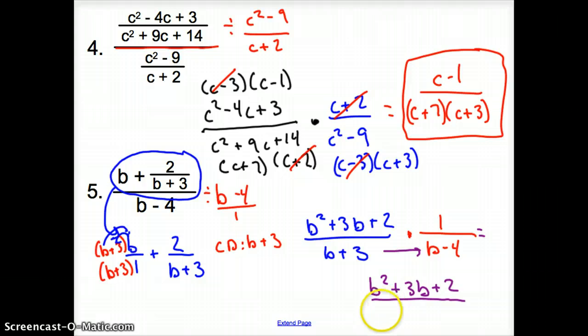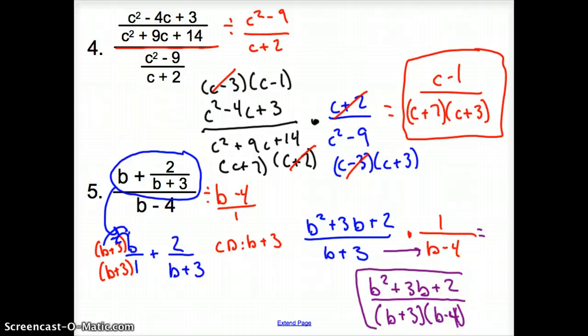It's going to equal a b squared plus 3b plus 2. And that all goes over. Now we're just multiplying these two things together. But, ladies and gentlemen, you can just leave it in parentheses. So it's going to be b plus 3 times b minus 4 for your answer. And this is a 4 down there. So this is your simplified rational expression.